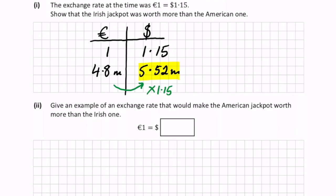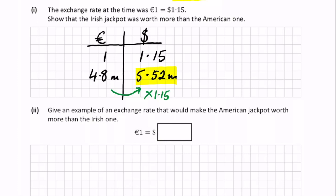Give an example of an exchange rate that would make the American jackpot worth more than the Irish one. Well, what we would like for the American jackpot to be worth more, we'd like that a euro would be worth a lot less than the American dollar.